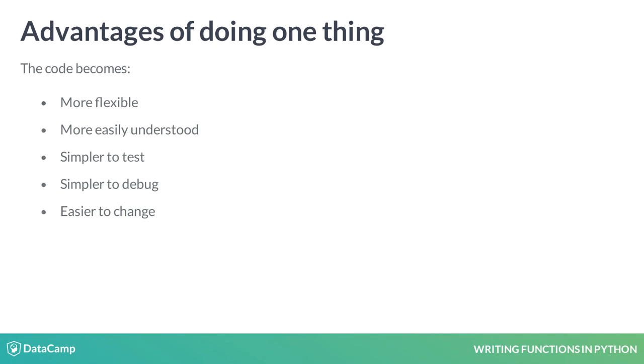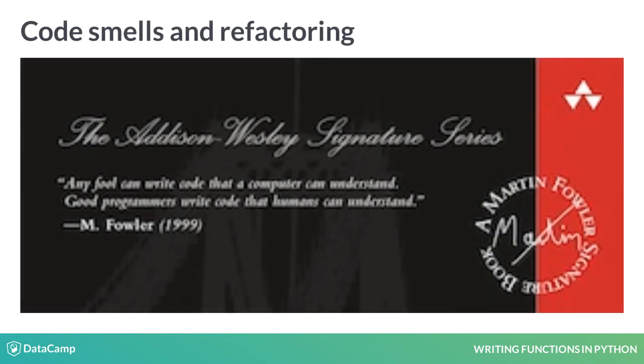Repeated code and functions that do more than one thing are examples of code smells, which are indications that you may need to refactor. Refactoring is the process of improving code by changing it a little bit at a time. This process is well described in Martin Fowler's book Refactoring, which is a good read for any aspiring software engineer.